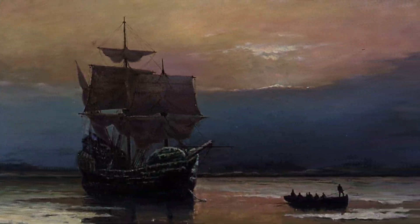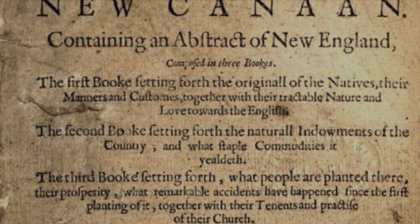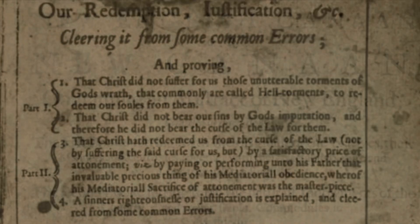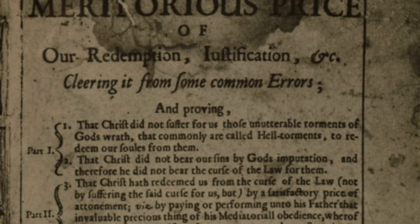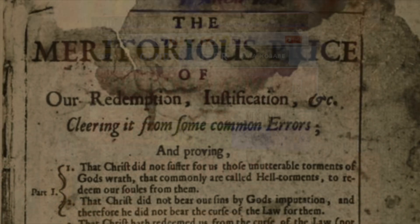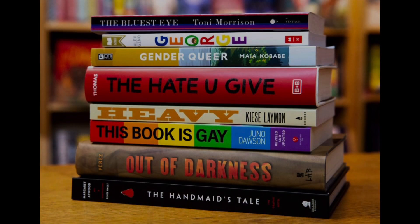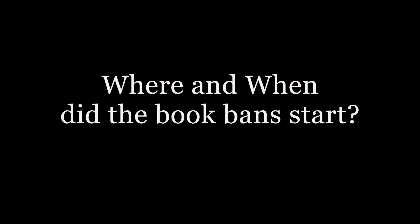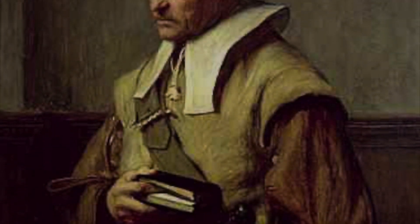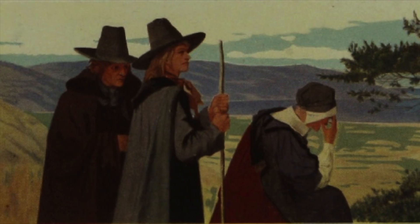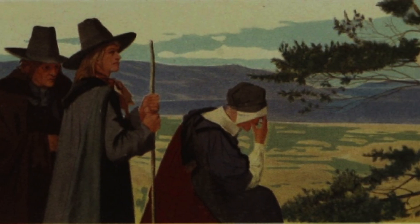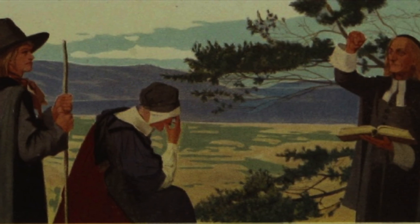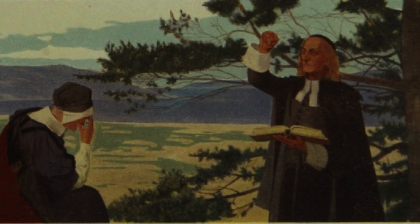The first book bans in American history came in 1637 and 1650. Why did they happen, and what do they have in common with recent attempts to ban books? Book banning in America has its roots in the religious fanaticism of the Puritan colonies of New England. Driven by their persecution in England and the desire to ensure their security in America, the Puritans were highly suspicious of social, political, and religious variations.